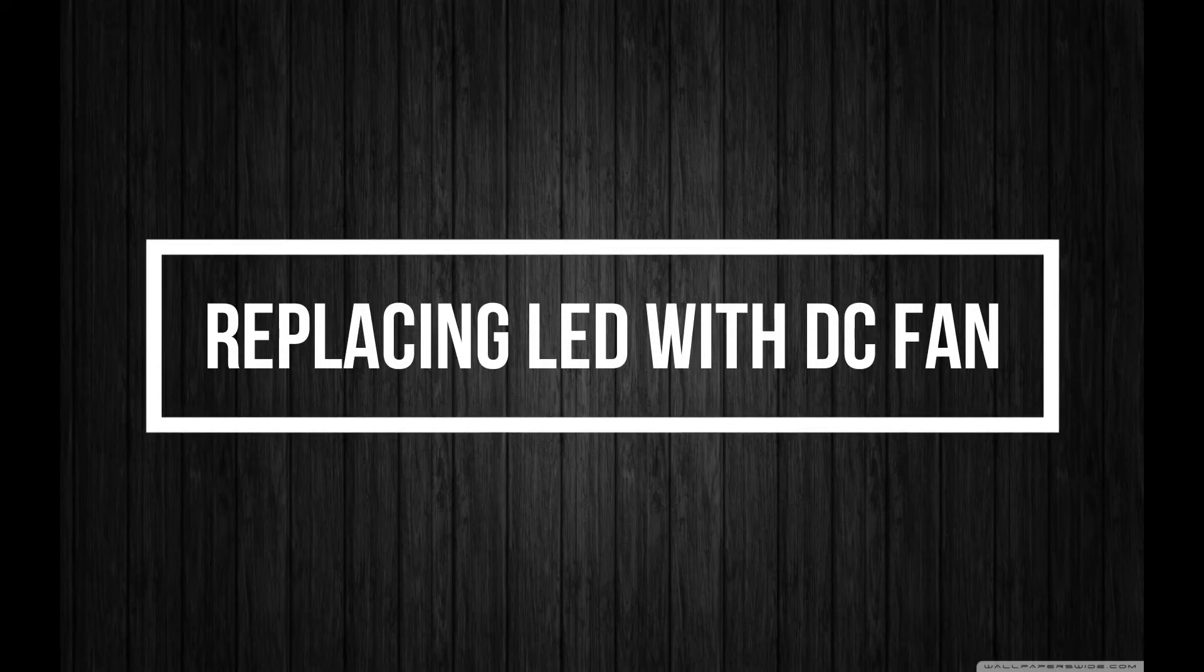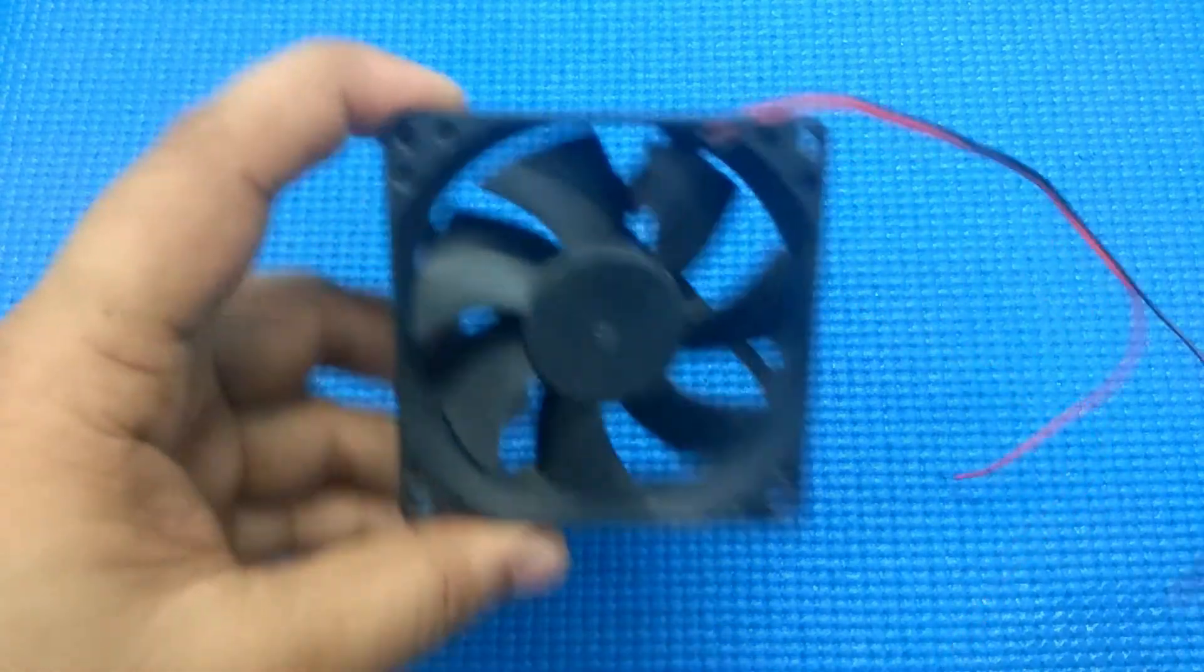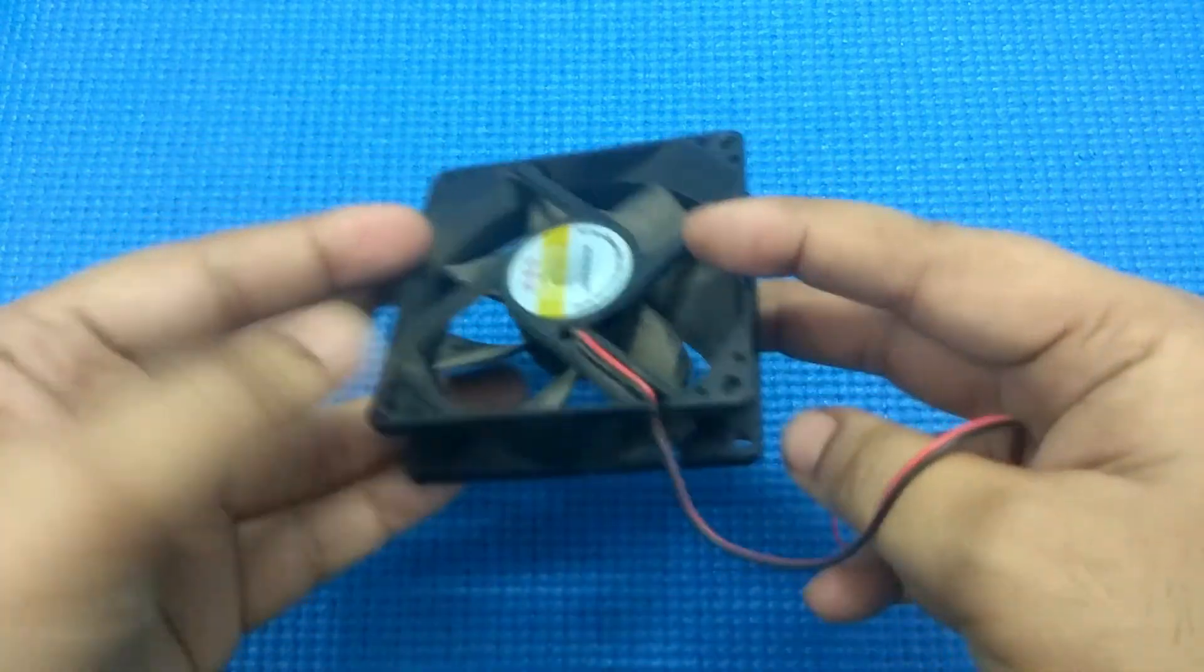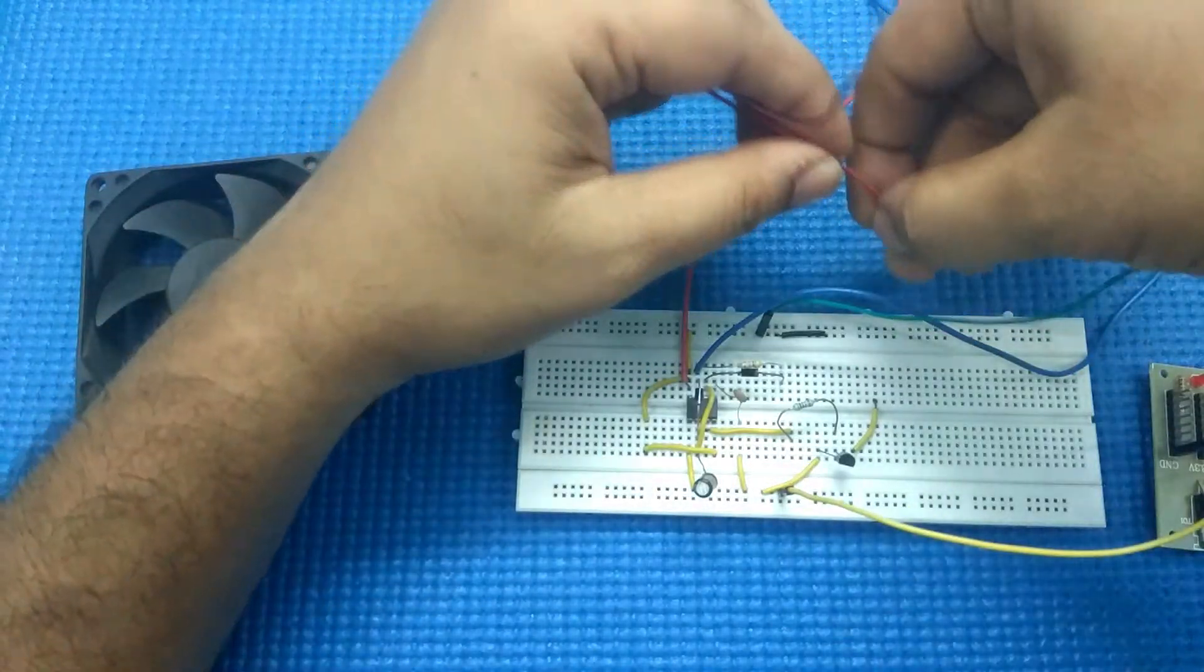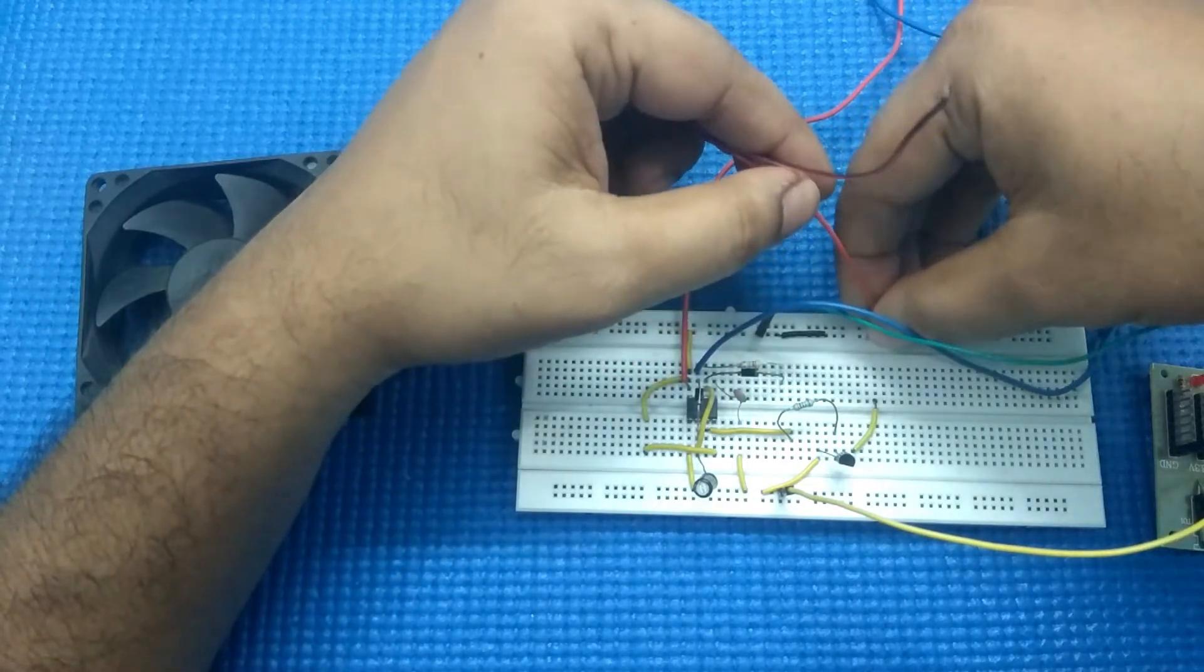You can also use a DC fan in this circuit and control its speed. All you have to do is connect the DC fan to collector terminal of transistor along with the protection diode.